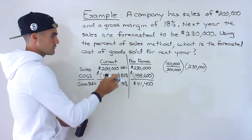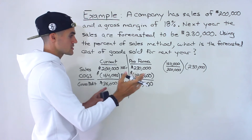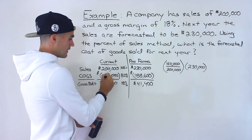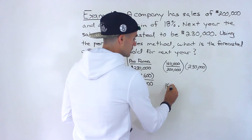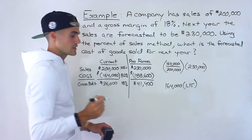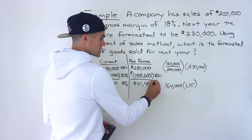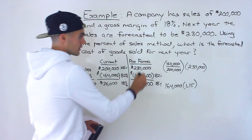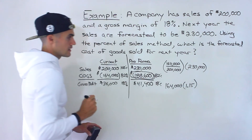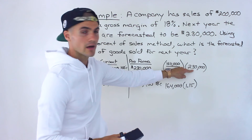Another way to do this is to find how much sales grew percentage-wise: new minus old over old, which is ($230,000 − $200,000) / $200,000 = 15%. Then multiply $164,000 by (1 + 0.15), and you end up getting $188,600 as well. Notice that the percentages check out — COGS is 82% and gross profit is 18%. So there are multiple ways to do it; using the percent of sales method, we found the COGS percentage and multiplied it by future sales.